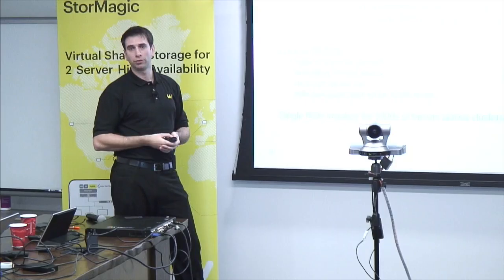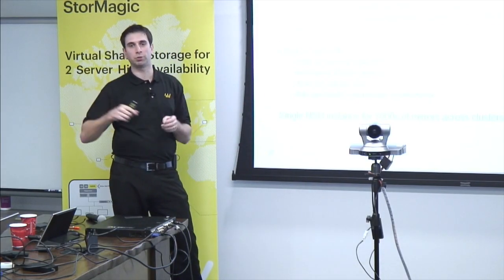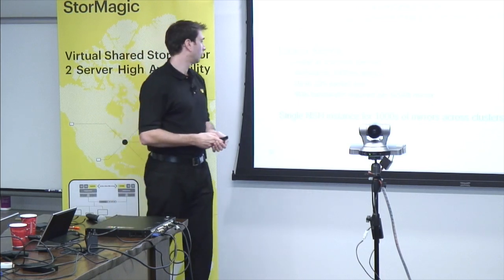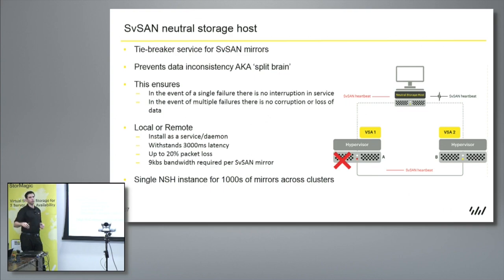Q: What happens if the SSD fails? A: If the SSD fails, you have an issue in your caching layer. That cache will be taken offline on that side, but you can still actively cache on the other side because we have two hosts. Q: Will it use the other SSD? A: You lose your cache on that side — you've had two failures at that point, two SSDs across two separate hosts. Best practices dictate you should have a RAID 1 for the SSDs on each host to prevent against that. Also, a single neutral storage host can maintain and arbitrate for thousands of locations — it's not limited to a single pair cluster.